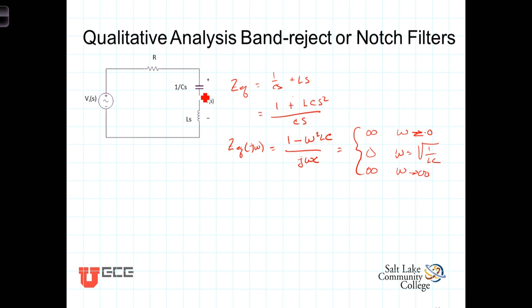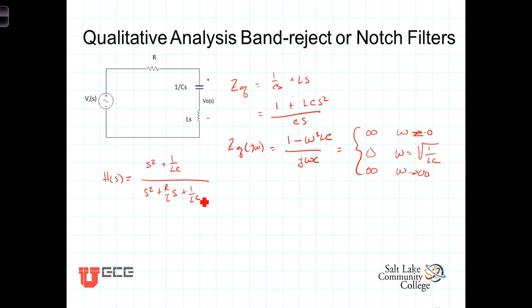Now let's go ahead with the transfer function. It can be shown using voltage division techniques that H(s) = (s² + 1/LC) / (s² + (R/L)s + 1/LC), where β = R/L.